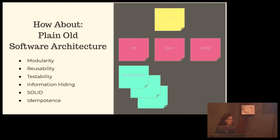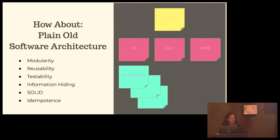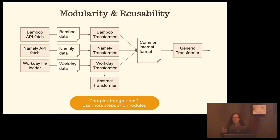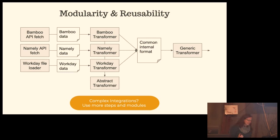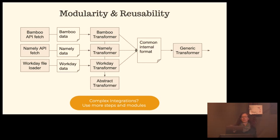So my proposal is: how about some plain old software architecture, some design patterns around this? The sticky note message is: work on your code architecture. We all know some of the characteristics — modular software is great. It's easier to test, easier to name, easier to keep separate from other code, easier to maintain. If you have good information hiding around your modules — as my English-accented software engineering professor used to say — it really helps you deal with the complexity. And when your Bamboo API changes, it's fine — it's just the Bamboo code that needs to change.